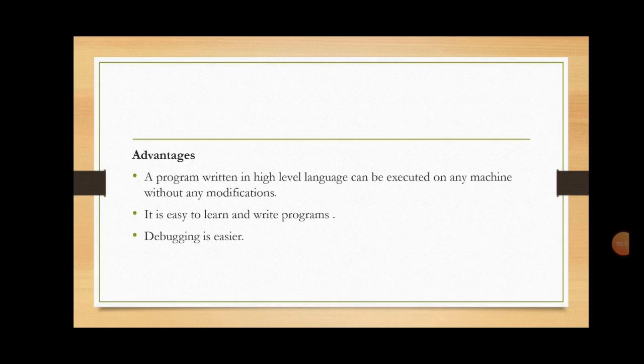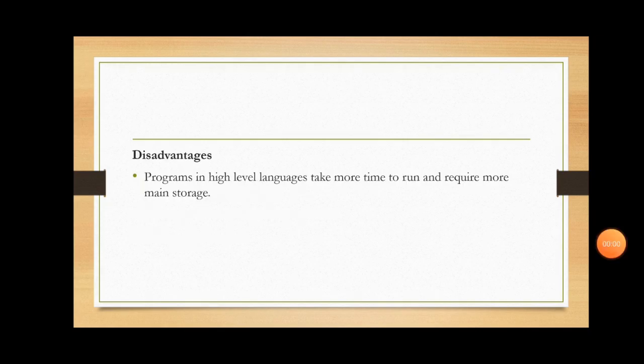The advantages of using high-level programming languages are as follows. A program written in a high-level language can be easily executed on any machine without any modification, meaning all high-level language programs are machine-independent. It is also easy for programmers to learn and write programs using high-level languages, and since English words and mathematical symbols are used, error correction is much easier. The main disadvantage is that programs written in high-level language take more time to run and require more main memory because of the use of translators.